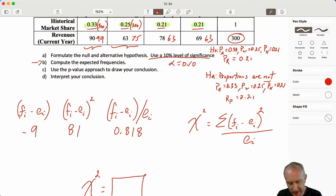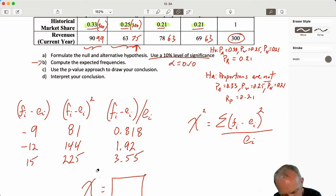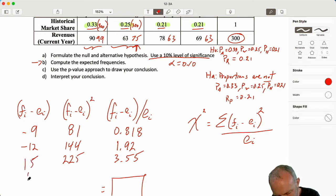Next one, 63 minus 75 minus 12 squared divided by that expected value, 75, 1.92. Next one, 78 minus 63, 15, 15 squared 225 divided by that expected value, 3.57. And the next one, I'm just going to run out of room, 69 minus 63, whoops, is 6, 6 squared 36 divided by 63, 0.571.